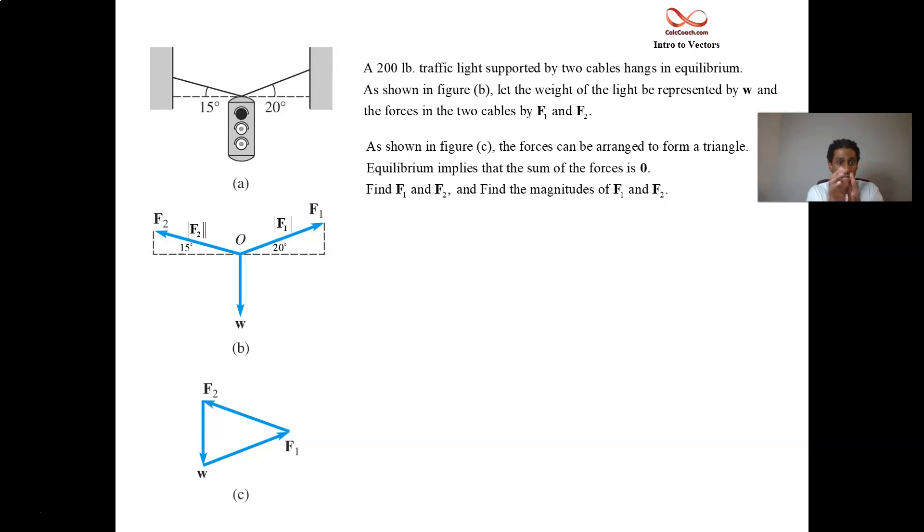We have the origin at zero there, the point O. F1 is going to the right, a positive X and a positive Y, but F2 is going to the left. That's a negative X and a positive Y. We have to take these negatives into account.